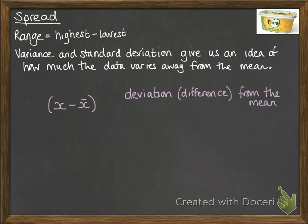These both give us some idea of how much the data varies away in relation to the mean. Now we start with this (x - x̄). That's the deviation or the difference of the x value from the mean. Remember, x̄ just means the mean. So if we take our value and subtract the mean, we'll know how far that value is away from the mean.